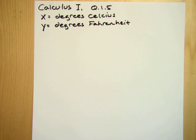A temperature of zero degrees Celsius, which is the temperature where water freezes, corresponds to 32 degrees Fahrenheit, and a temperature of 100 degrees Celsius, the boiling point of water, corresponds to 212 degrees Fahrenheit.